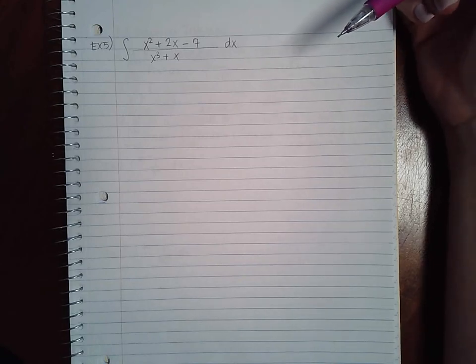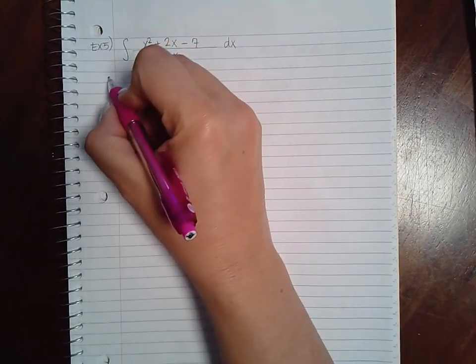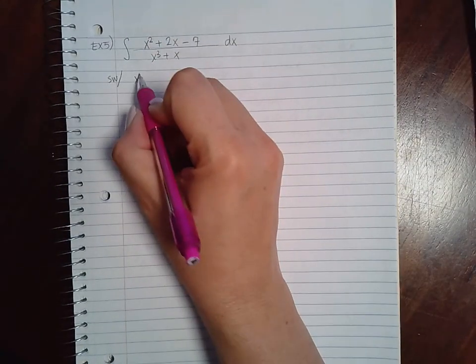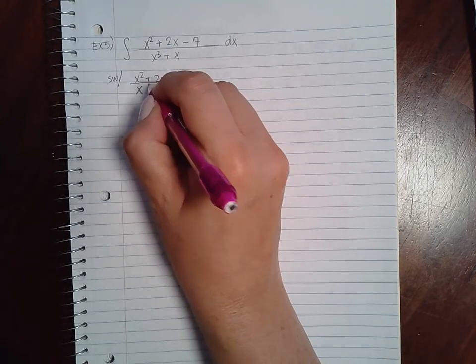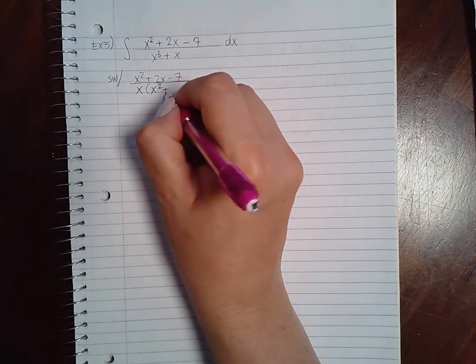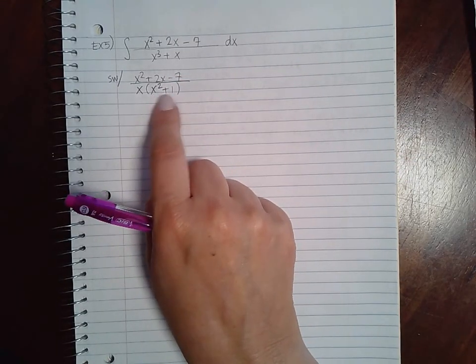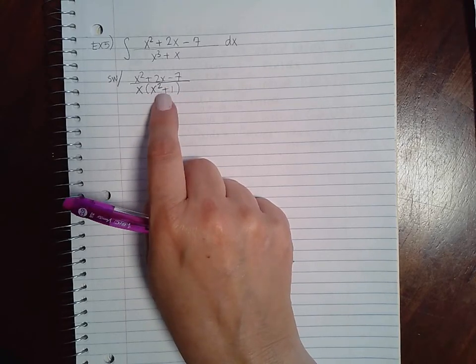So here we're going to get x squared plus 2x minus 7 in the numerator. In the denominator I can factor out an x and I get x squared plus 1. Now this is a sum of squares which cannot be factored.